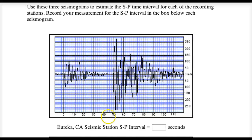So here we get 42, 46, 48, 50. We want to figure out how far along — my guess is around 49. Someone might say 48, 49, or 50. So under Eureka, we would type in 49. The S wave, the secondary wave, came in 49 seconds after the initial P wave.